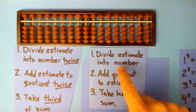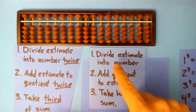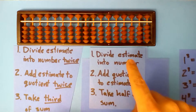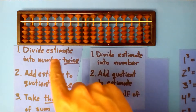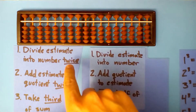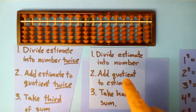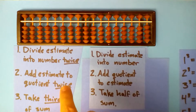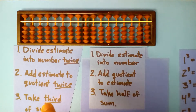Let's compare those two first because they're very similar. This is the square root and this is the cube root. Remember, first we divided an estimate into the number — now we're going to divide it into the number twice. Before we added the estimate to the quotient — now we're going to add the estimate twice. Before we took half of the sum — now we'll take a third of the sum.